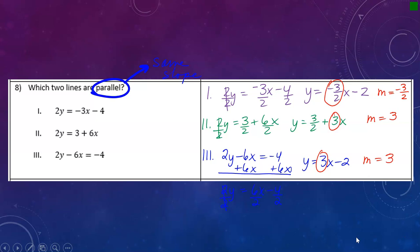Now since I'm looking to see which ones are parallel, I'm picking the ones that are the same slope. That would be lines 2 and 3. My final answer is 2 and 3.